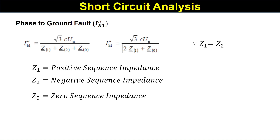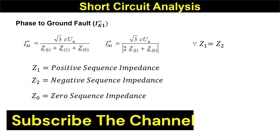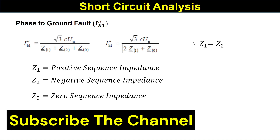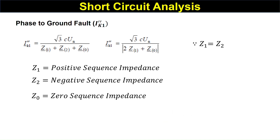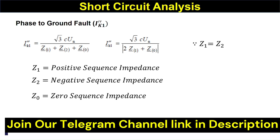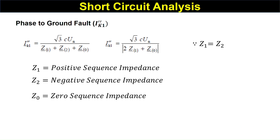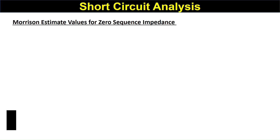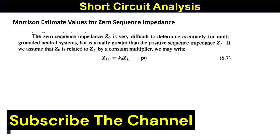To calculate the phase-to-ground fault, we need to know the zero sequence impedance. The positive sequence impedance and negative sequence impedance are equal, but we have to calculate the zero sequence impedance separately. Zero sequence impedance can be obtained from the manufacturer for machines, transformers, generators, conductors, or transmission lines. If the manufacturer does not provide it, or if you are doing a preliminary short circuit analysis, then you can use estimated values.